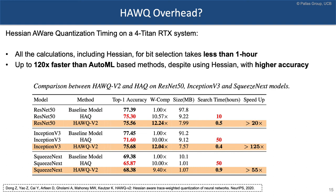Comparing to the prior state of the art — the HAQ AutoML-based hardware-aware quantization method — our approach is 100 times faster and achieves higher accuracy. HAQ on ResNet50 achieves 75% accuracy after 10 hours of search time. AutoML is essentially learning which blocks are sensitive and using high precision for those. But we don't need that: with the Hessian, we know what layer is sensitive, and there is no searching — just computing the Hessian — and we get better results.